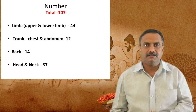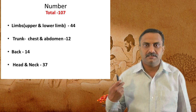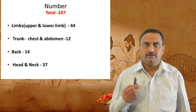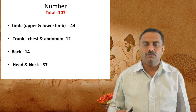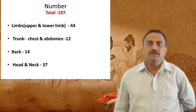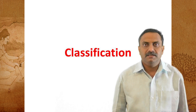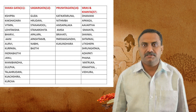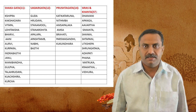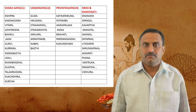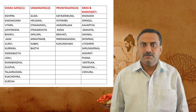Marmas are classified by location: Shakagata Marma (limb) — 44; Urahagata (chest and abdominal, anterior body) — 12; Prushtagata (back) — 14; and Shirordhva (head and neck) — 37. According to Parinama (outcome), classification is: Sadyopranahara — 19; Kalantara Pranahara — 33; Vishalakna — 3; Vaikalakara — 44; and Rujakara — 8.